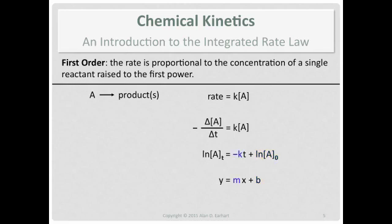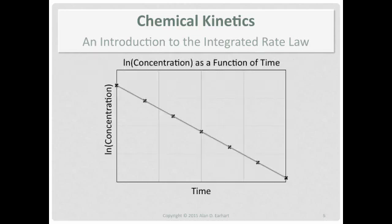So we do the same thing. Plot the data appropriately, take your line of best fit, you know, like this, get the slope from that. Slope is negative the rate constant.